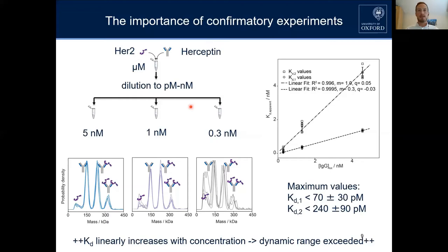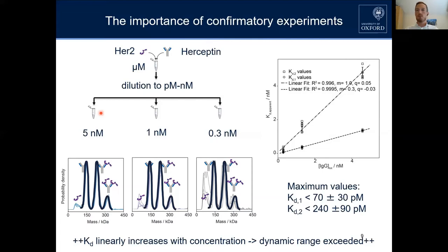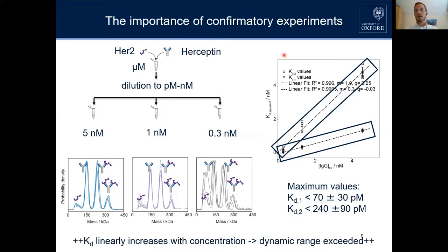What we observed was that independent of concentration, our data looks always the same. When we quantify that more precisely, we see a very strong linear dependence of KD on concentration, which should obviously not be the case. This is a clear indication that the interaction is too tight for us at these concentrations — we would need to go to much lower concentration.